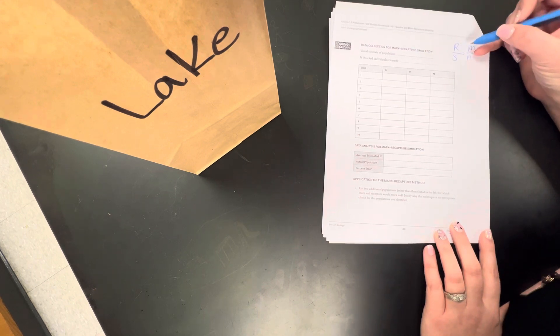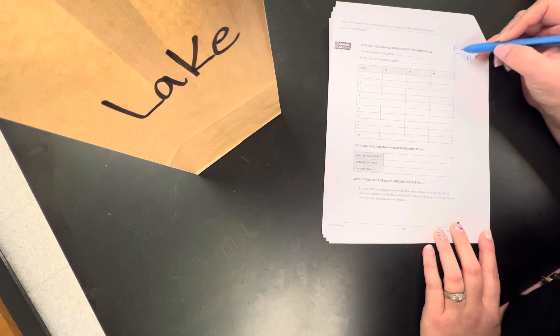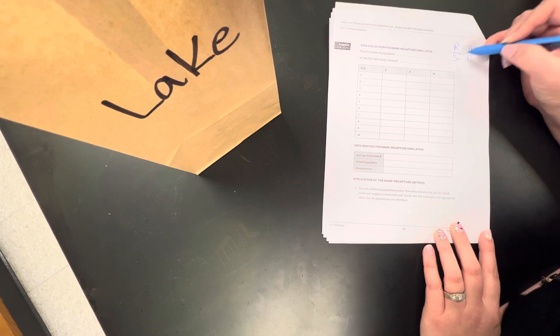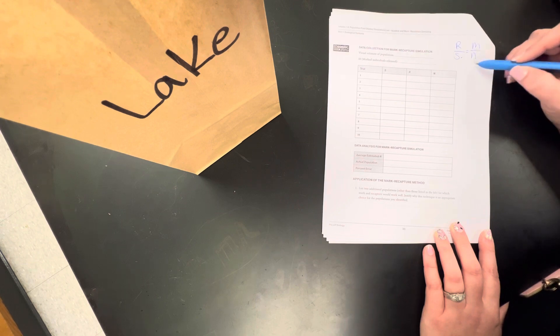So we have our formula. We have R, our recaptured marked ones. This is our second sample S. M is going to be our marked individuals the first time we caught them. And then we are solving for N today.